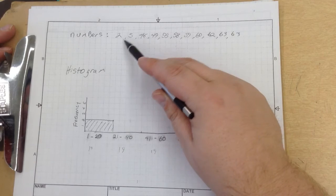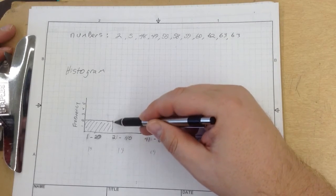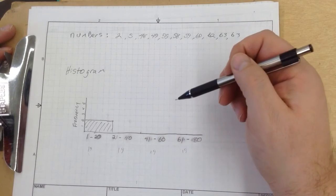So when we check this out, I've got 2 numbers, my frequency is 2. So I shade it in that overall area.